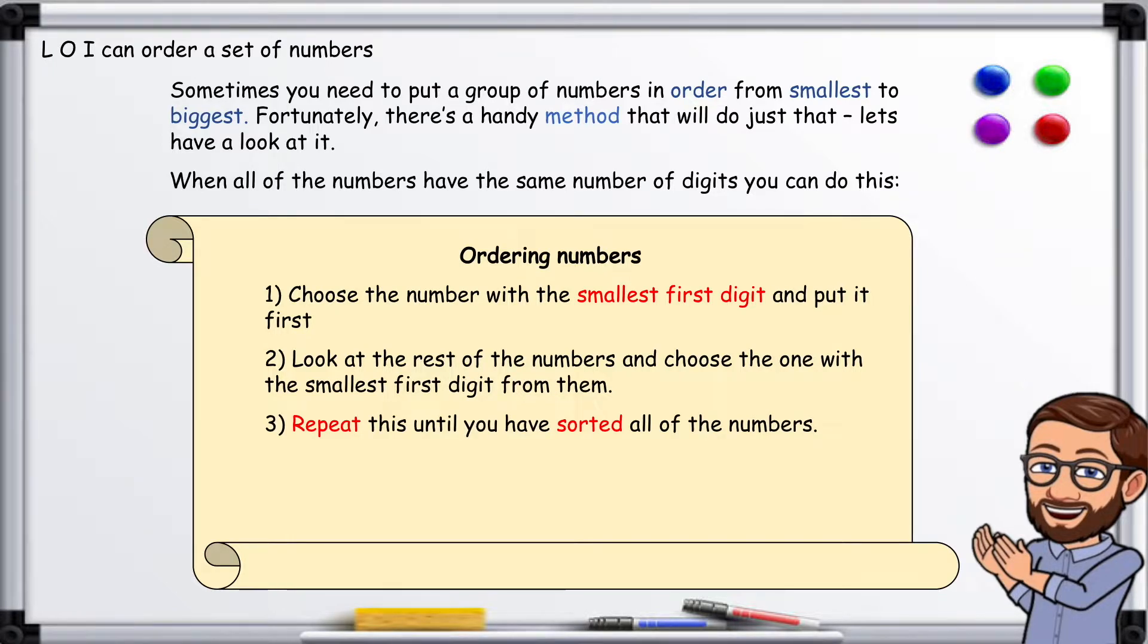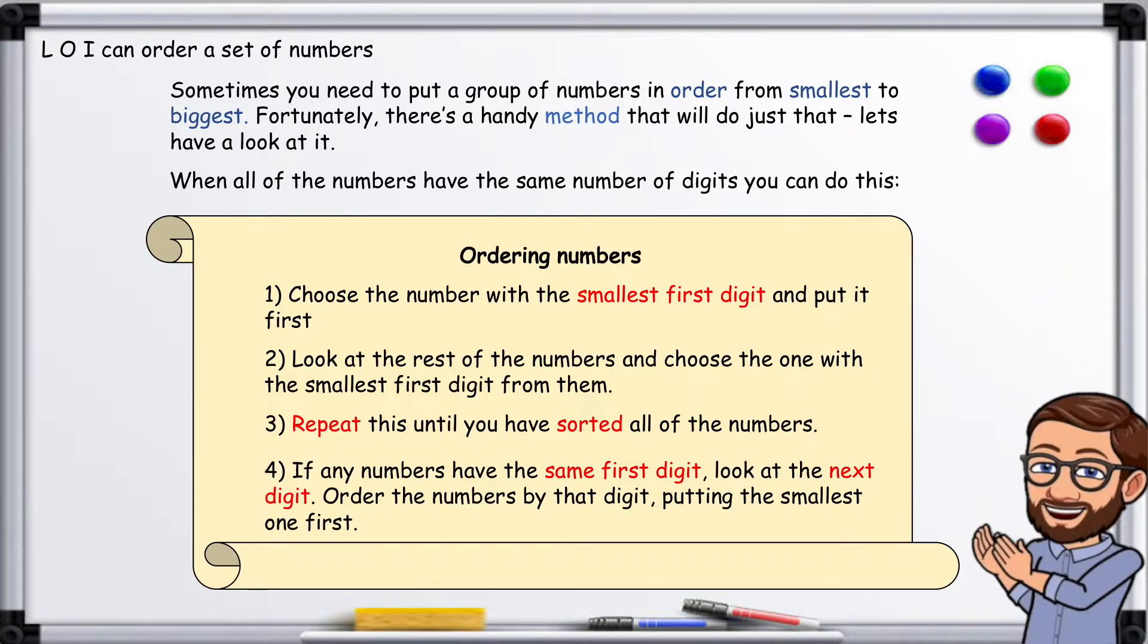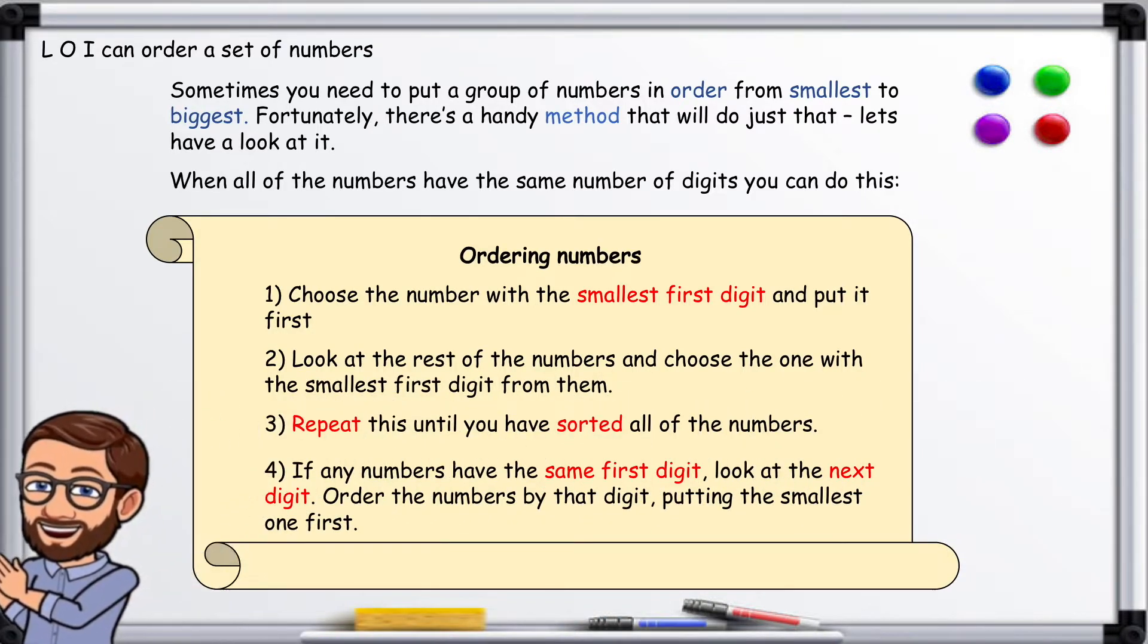3. Repeat this until you have sorted all of the numbers. 4. If any numbers have the same first digit, look at the next digit. Order the numbers by that digit, putting the smallest one first.